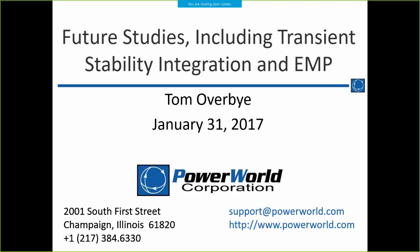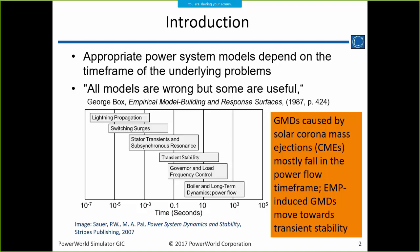Scott and Jamie asked me to talk about where things are going, particularly with modeling EMP. When we talk about power systems, we have to deal with a wide variety of different time frames. This chart from Pete Sauer and M.A. Pai shows on a log scale the different time frames we deal with, from lightning propagation at near the speed of light, through transient stability at cycles to seconds, and out to longer-term power flow.